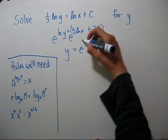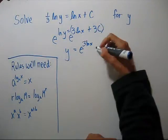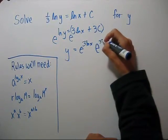So this is e to the 3ln of x times e to the 3C.